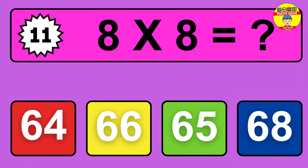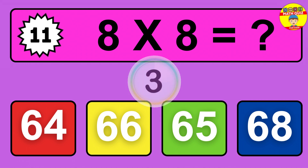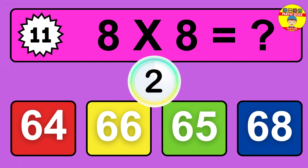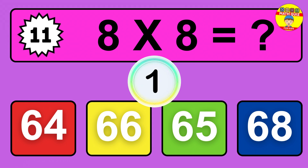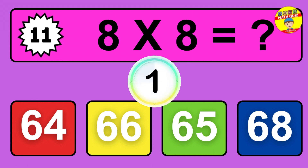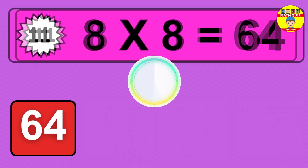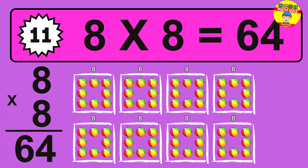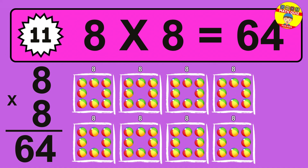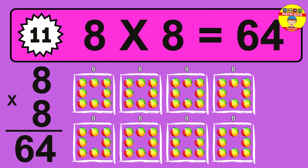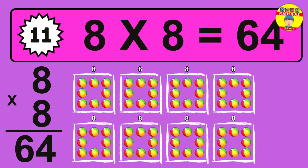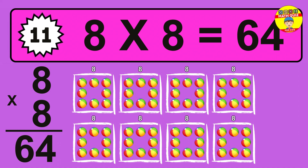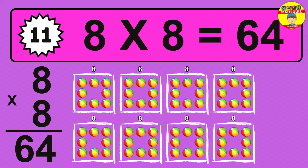Question 11. 8 times 8 equals what? The answer is 8 times 8 is 64. To calculate, we have 8 groups with 8 balls each one. So how many balls do we have? 64 balls.